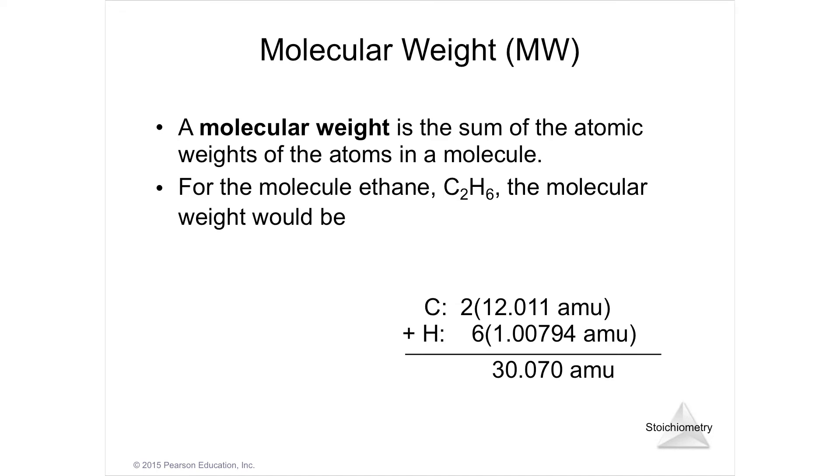So in review, a molecular weight is the sum of all the atomic weights of the atoms in a molecule. So 2 times, now here's the big number from the periodic table. I suggest you use the whole one. Don't round up at the beginning. You only round at the very end of a problem.